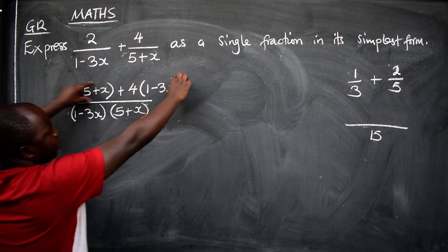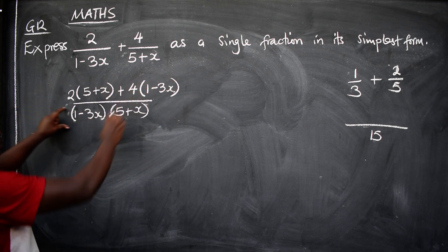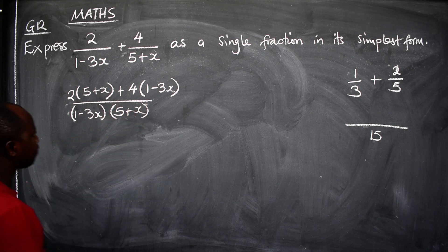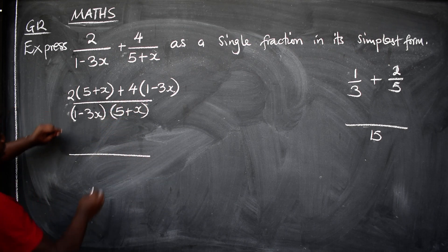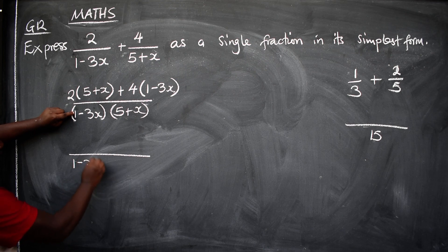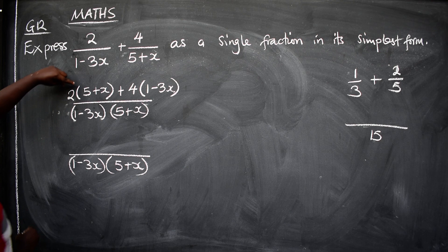Then you just work out on the top part, the numerator. Leave the denominator the way it is. Draw the line. The denominator is 1 minus 3x, then 5 plus x. On top here, now we can open brackets.